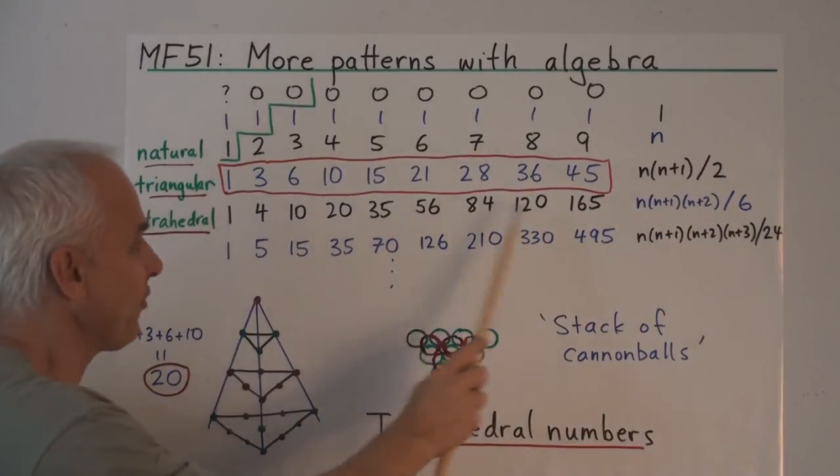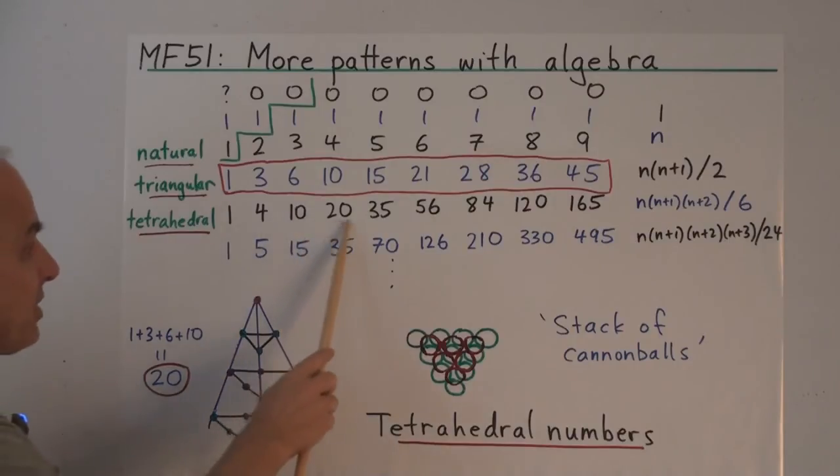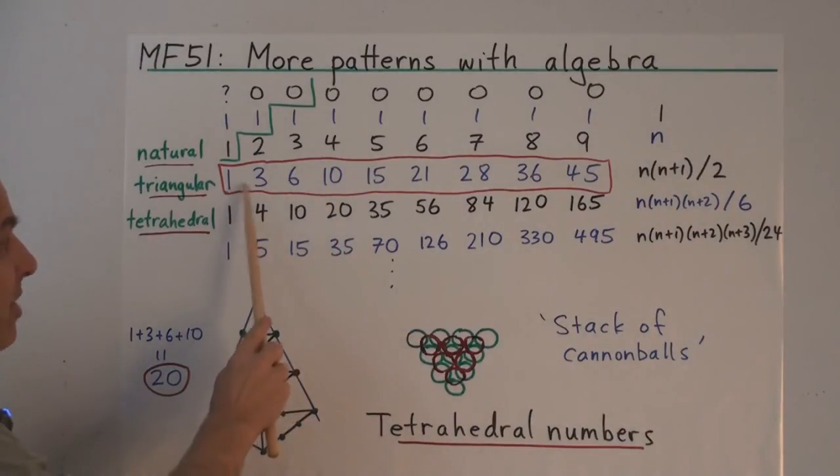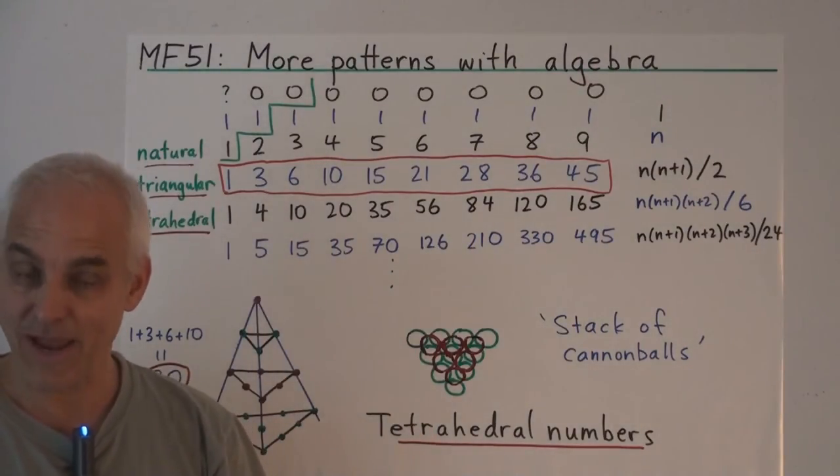So we have a new sequence of numbers, which might be called the tetrahedral numbers. And in this sequence, the 20 represents the sum 1 plus 3 plus 6 plus 10. So each one of these numbers is the sum of the first n triangular numbers.